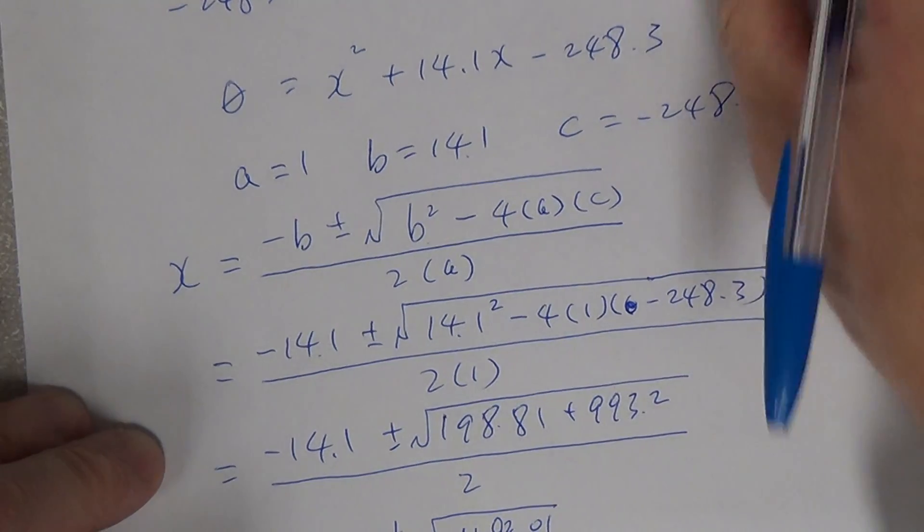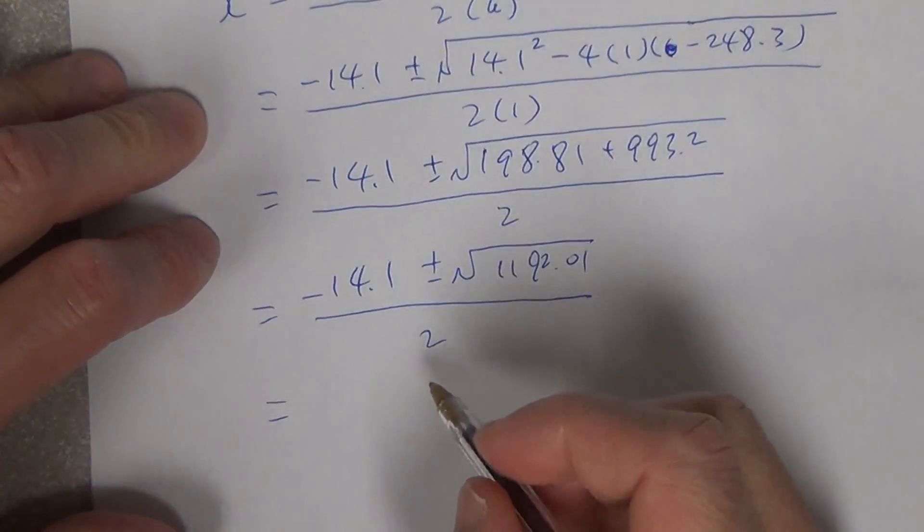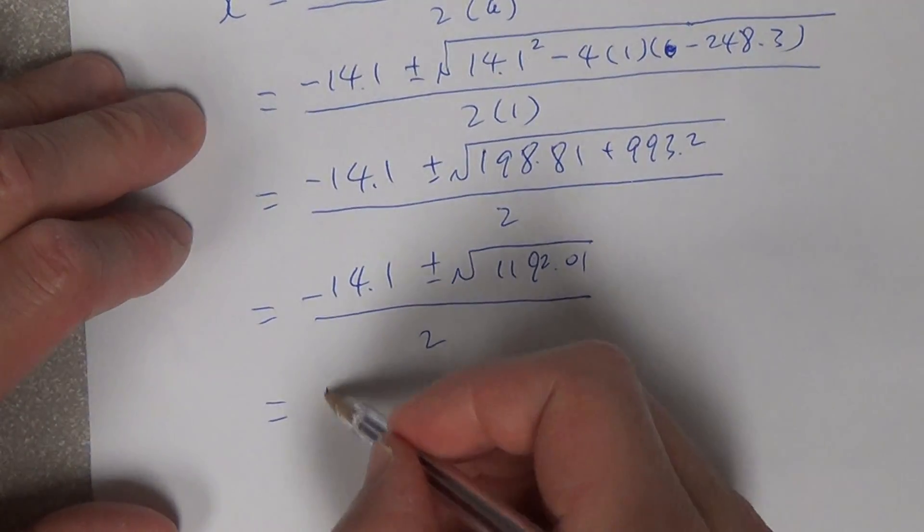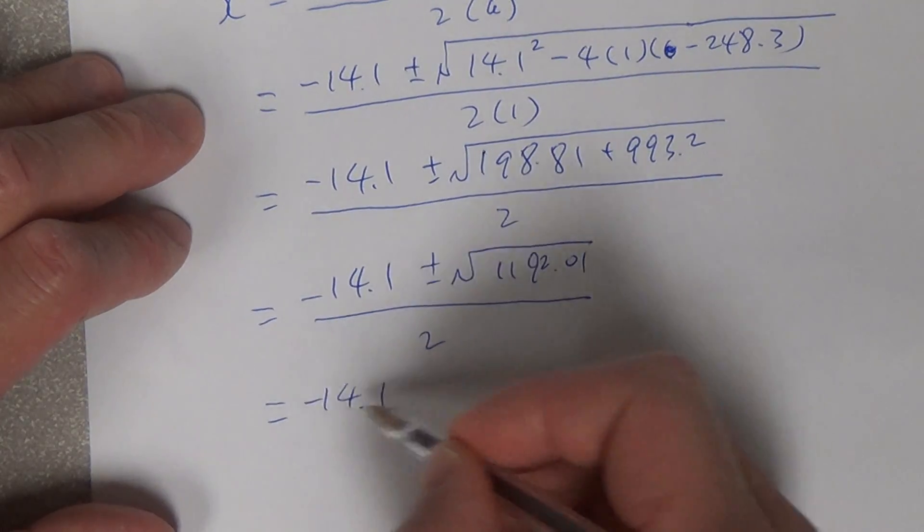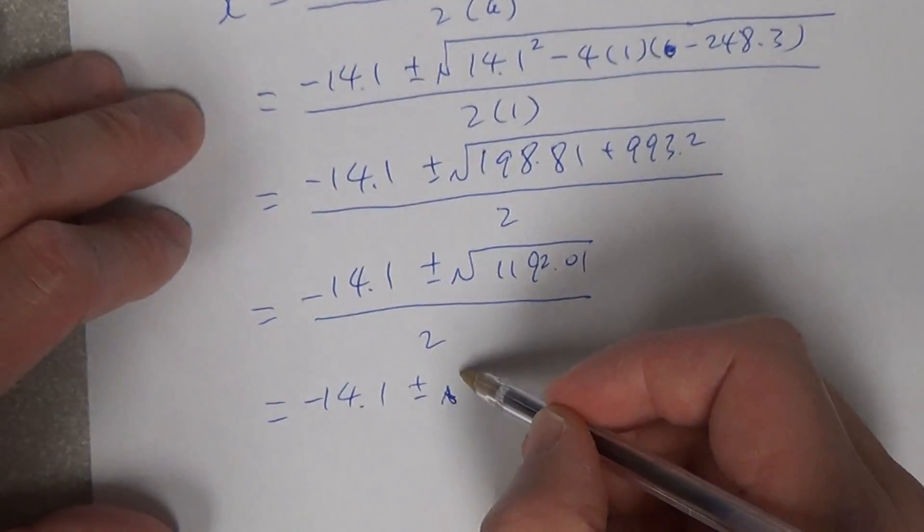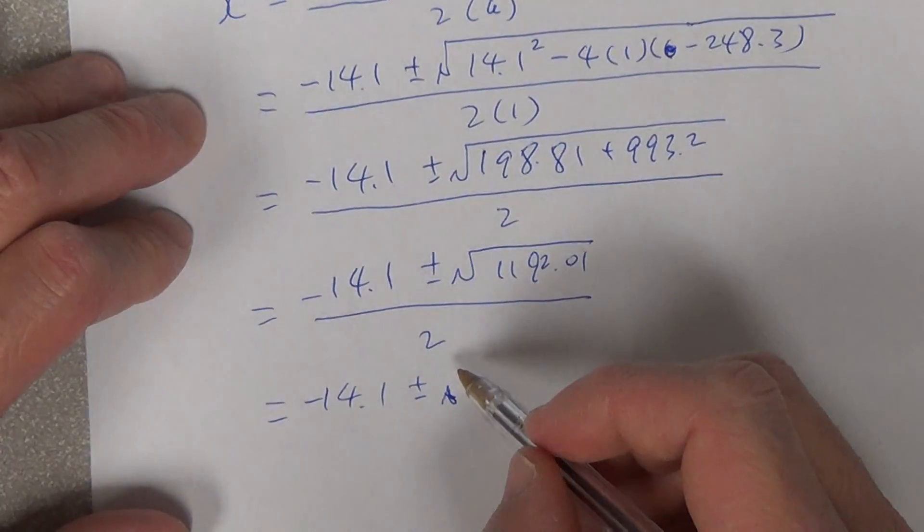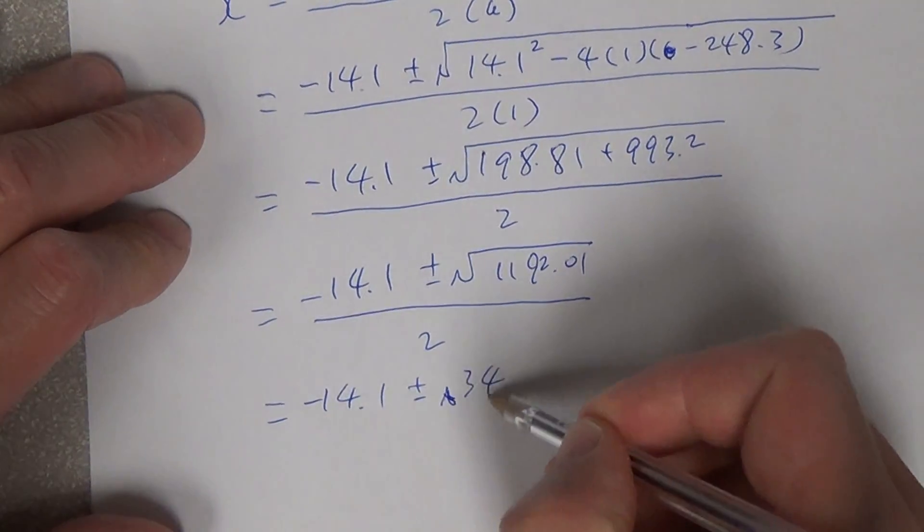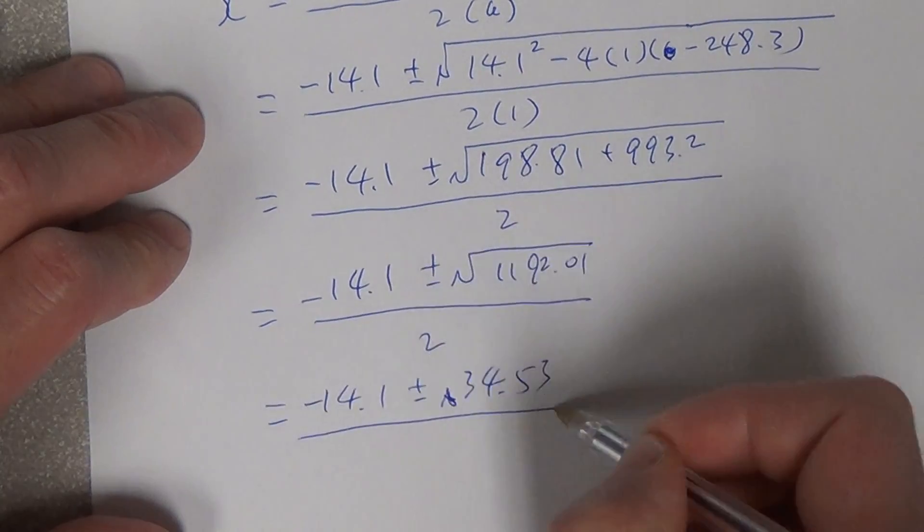And that becomes 14.1, negative 14.1 plus minus, now we get rid of square root. So what you get is 34.53 divided by 2.